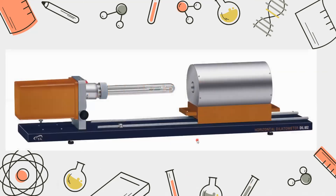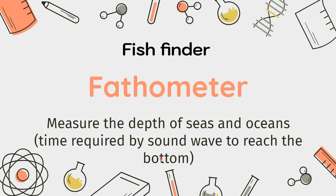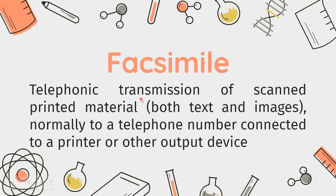Next is the Fathometer. A Fathometer is also called a fish finder and is used to measure the depth of seas and oceans. It does so by calculating the time required by sound waves to reach the bottom of the sea. Next is the Facsimile — the common name for facsimile is the fax machine. It is the telephonic transmission of scanned or printed material from one place to another, transmitting to a telephone number connected to a printer.